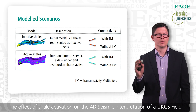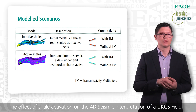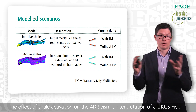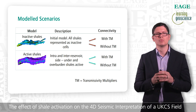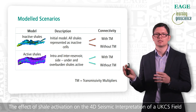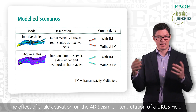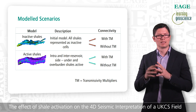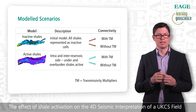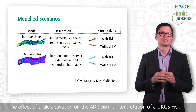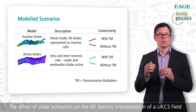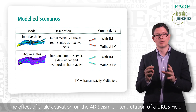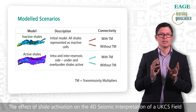To establish a reference between the active and inactive models, I created two different scenarios: one with all the shales inactive as in the initial conventional simulation model, and another where all the shales from overburden, underburden, sideburden, and inter-reservoir positions were activated. To observe the effect of the transmissivity multipliers modeled in the initial model, I also ran four extra scenarios where I removed some of them and let them all remain during simulation, to establish the effect of the shale on reservoir connectivity.